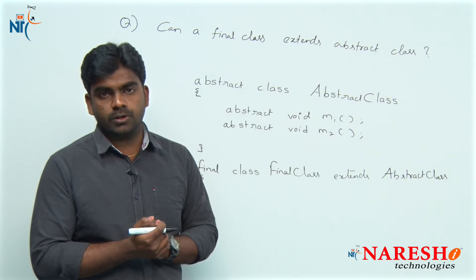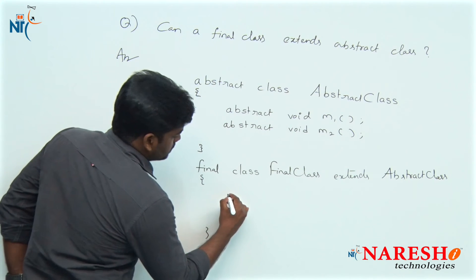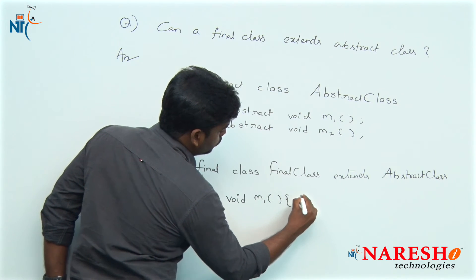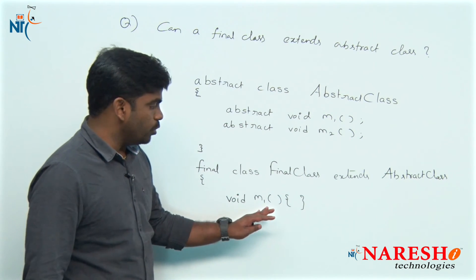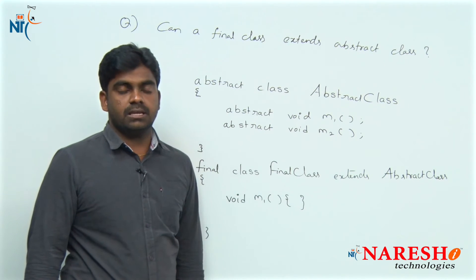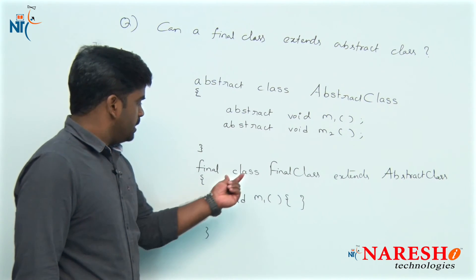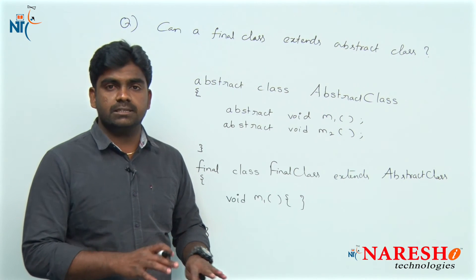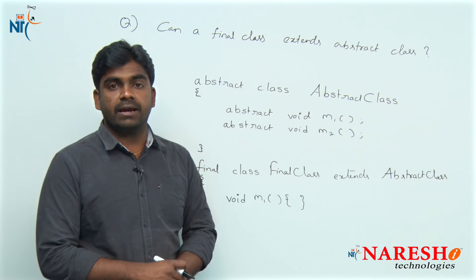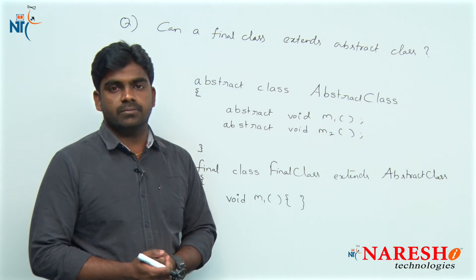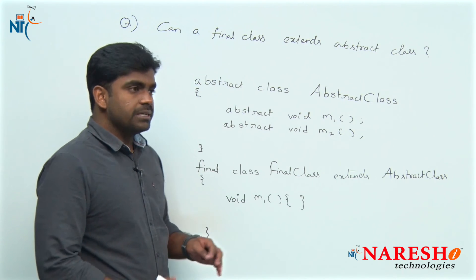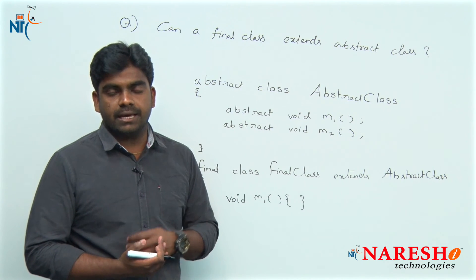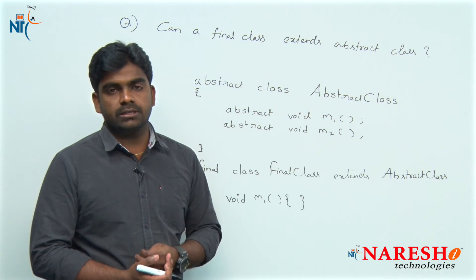Suppose I am overriding only m1 method and I do not want to override m2 — I want to override it in the next class. That is impossible because this is a final class, and for a final class no extensions are allowed. A final class is a fixed class; no one can update it. Extending means updation, so that is not allowed.